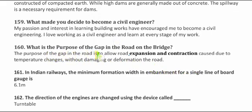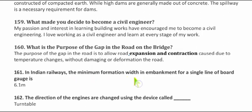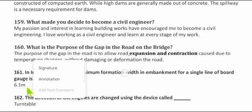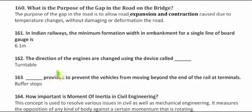Question 160: What is the purpose of the gap in a road or bridge? The purpose of the gap is to allow road expansion and contraction caused by temperature changes without damaging or deforming the road. Question 161: In Indian railways, the minimum formation width of embankment for a single line of broad gauge is 6.1 meters.